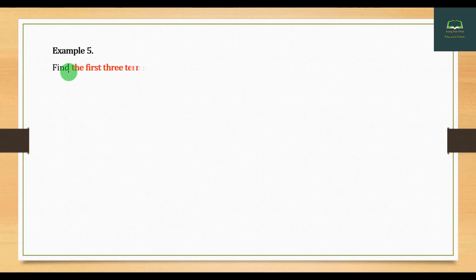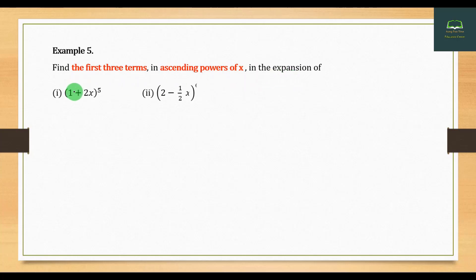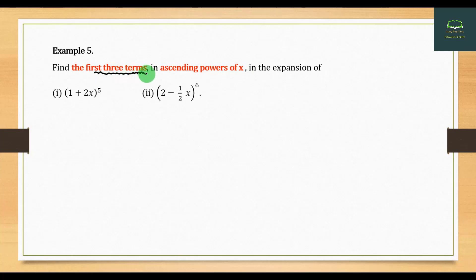We can find the first terms in the sum to the power of 8. Find the first terms in the sum to the power of 8, number 2: 2 minus 1 minus 2H. The expression is the first written by the first written. Multiply by 3D, then the next part is the last part.